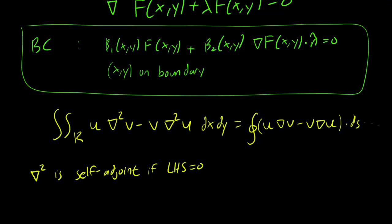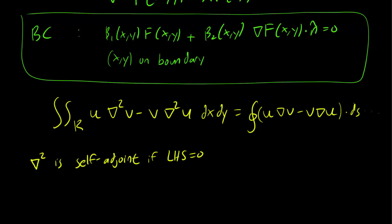So remember that u and v have to satisfy these boundary conditions. So we have the gradient of u dotted with n, the normal vector, is equal to beta 1 over beta 2 times u. We are going to assume here that beta 2 is never zero, but the proof isn't actually difficult if beta 2 is zero.